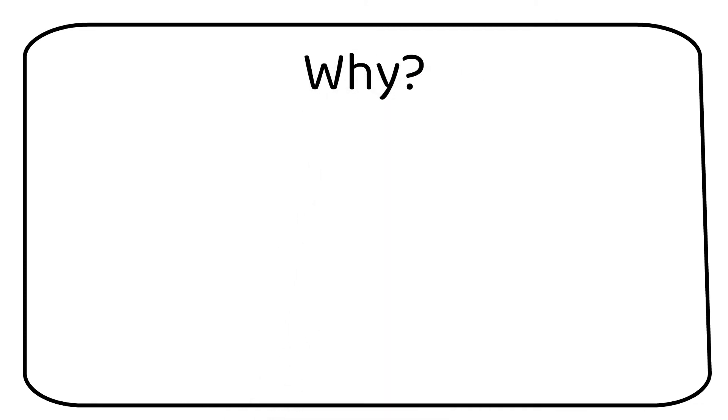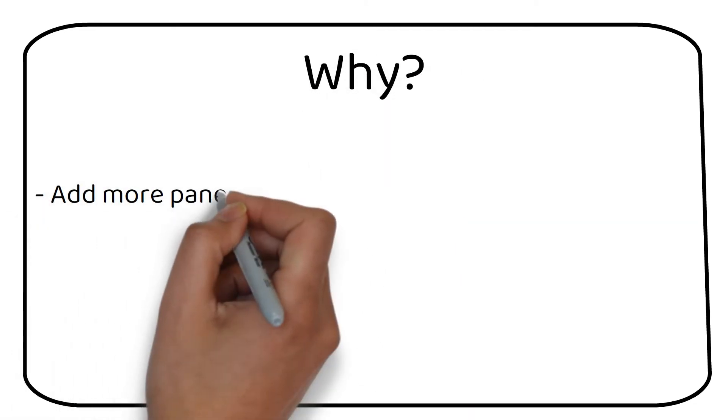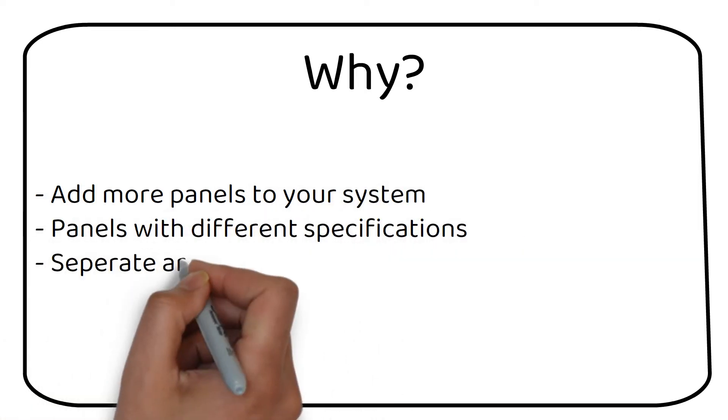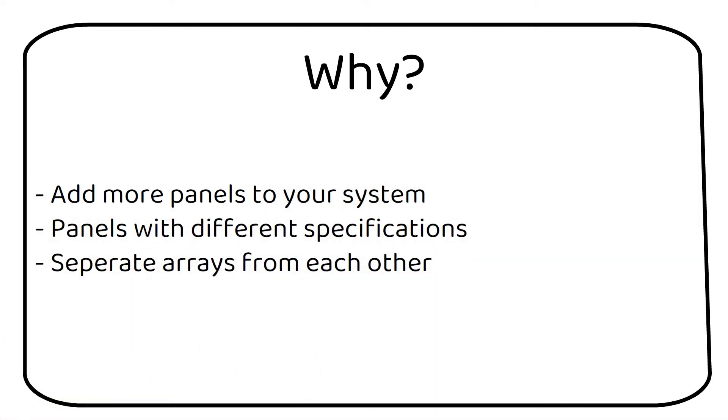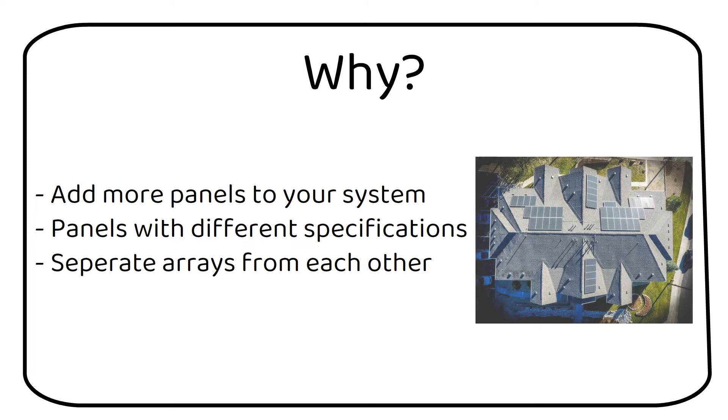There can be several reasons why you have multiple charge controllers for one battery. The first one is that you want to add more solar panels to your system. The second reason is that you want to add a panel with different specification than the one you already have. The third reason is that you want to separate panels from each other because they receive shade at different times of the day. For example an east and south facing solar array or a boat.